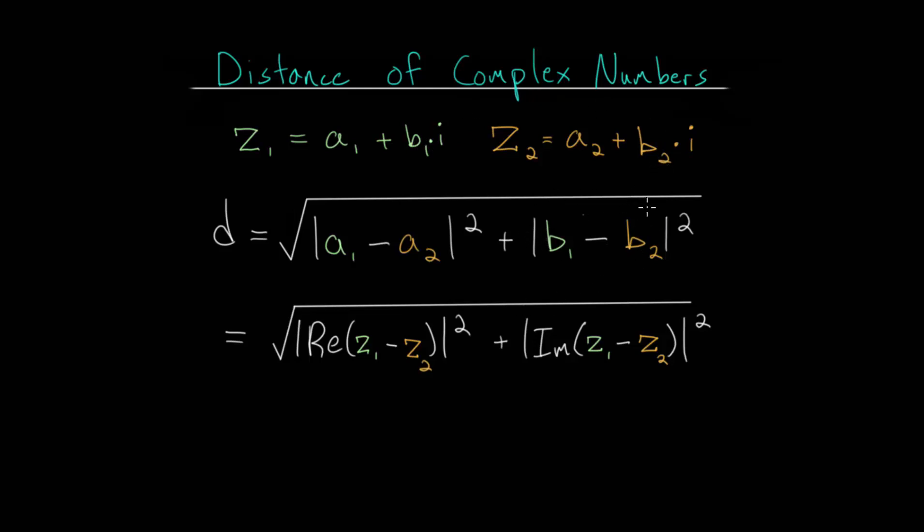We'll take the absolute value of that and square that. And after adding both those quantities together, we will take a square root of everything to get the distance between these two points.